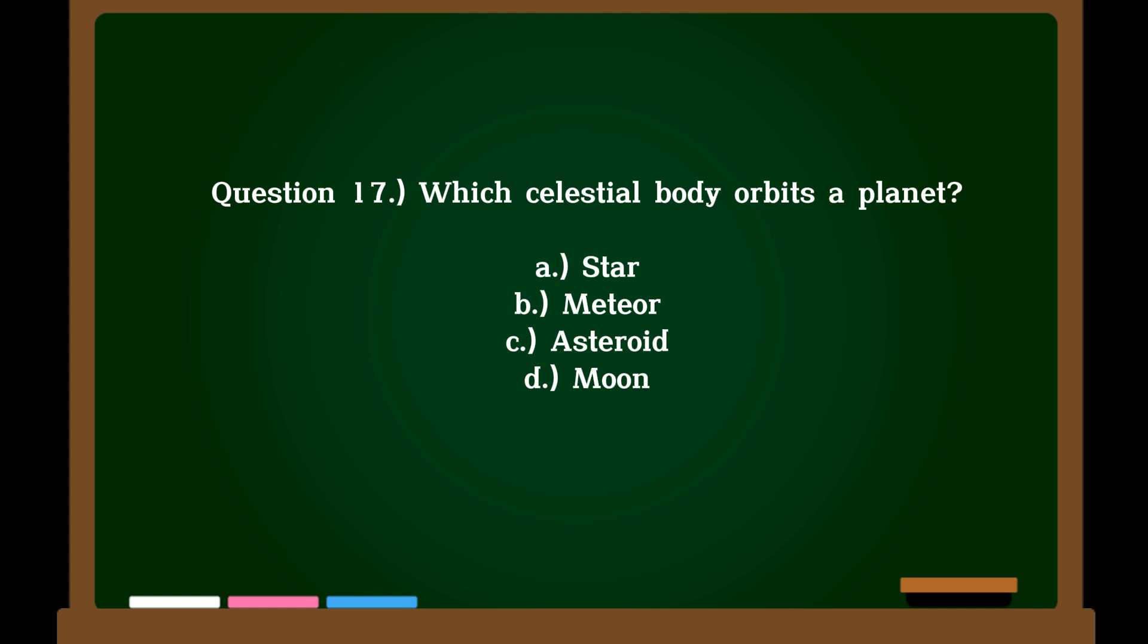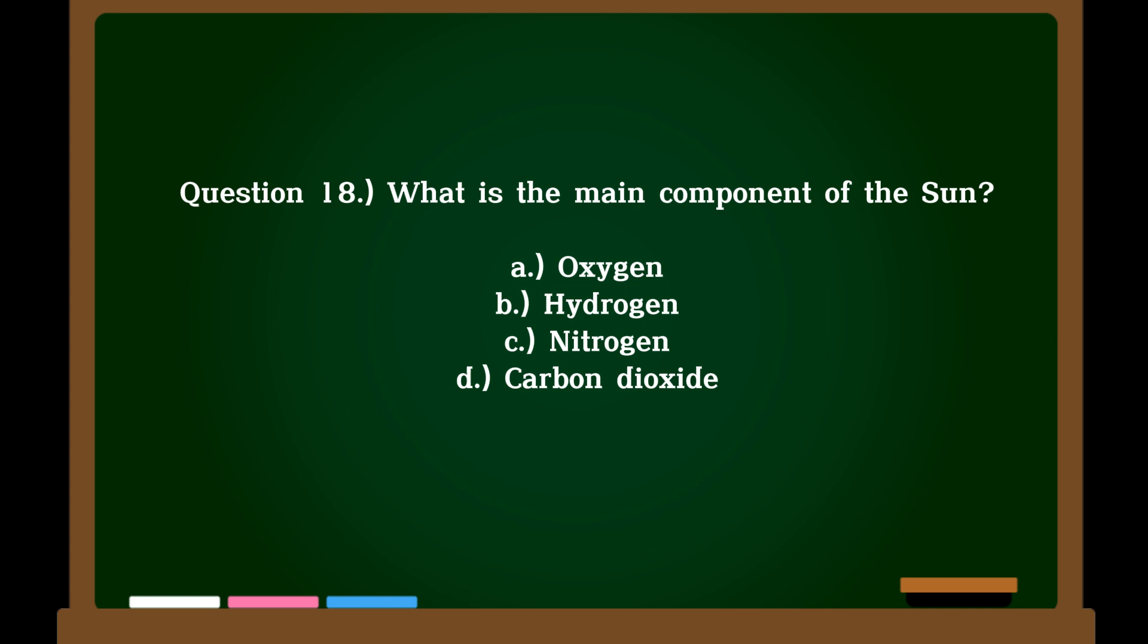Question 17. Which celestial body orbits a planet? A. Star, B. Meteor, C. Asteroid, D. Moon. Correct answer: D. Moon.